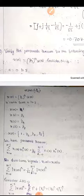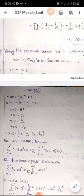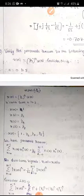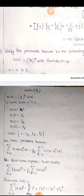For n=1: X(1) = 1/2. For n=2: X(2) = (1/2)² = 1/4. For n=3: X(3) = (1/2)³ = 1/8. So the sequence X(N) = {1, 1/2, 1/4, 1/8} for N = 0 to 3.